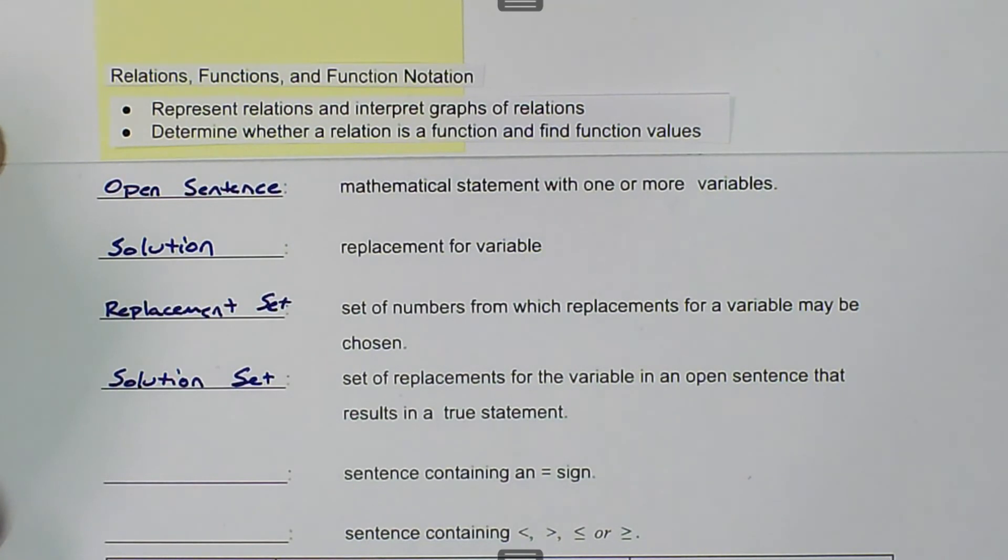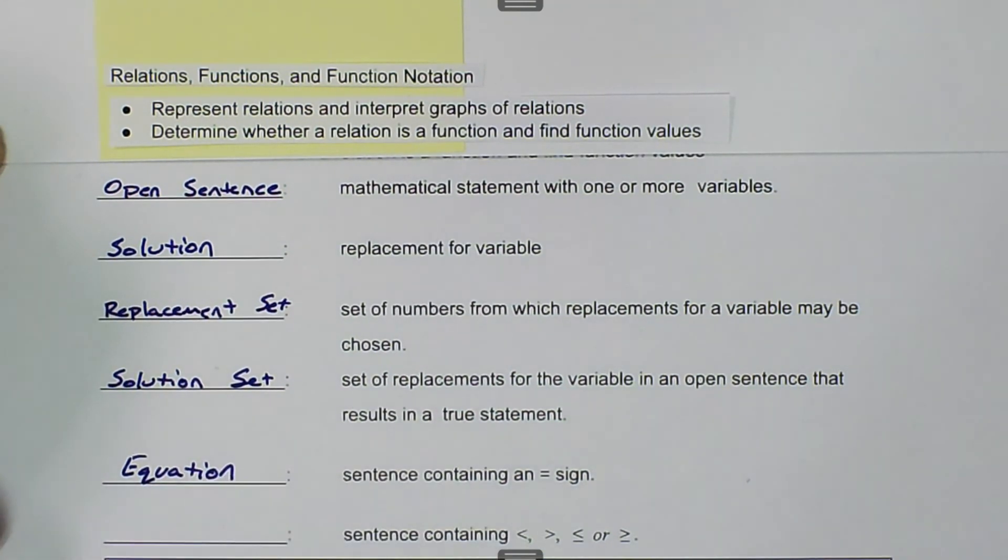A sentence containing an equal sign is an equation. And a sentence containing less than, greater than, less than or equal to, or greater than or equal to is an inequality.